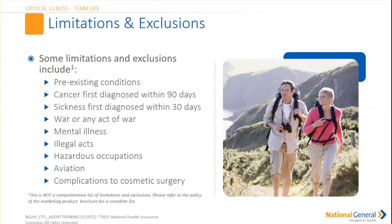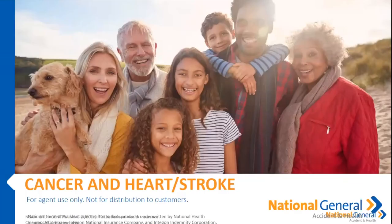Some limitations on the critical illness policy include: pre-existing conditions, cancer first diagnosed within 90 days, sickness first diagnosed within 30 days, war or any active war, mental illness, and illegal acts. For example, if someone was involved in robbing a bank and had a heart attack during that illegal act, it would not be a covered benefit. Hazardous occupations — such as bomb disposal — are also excluded, as is aviation, unless you are a passenger. Complications of cosmetic surgeries are also excluded.